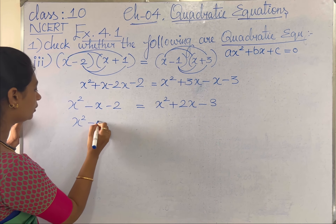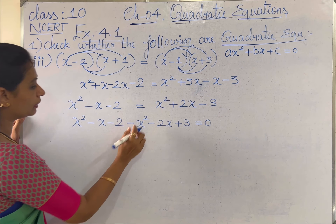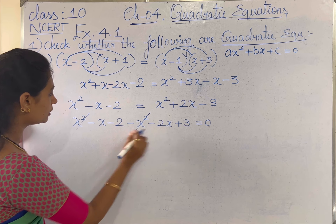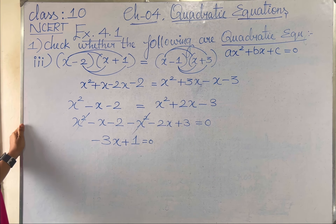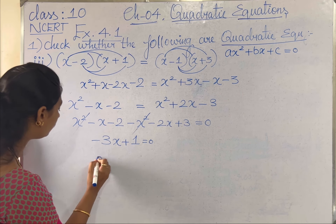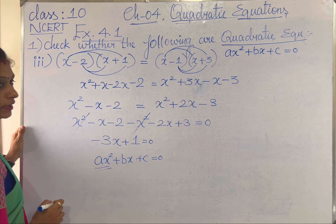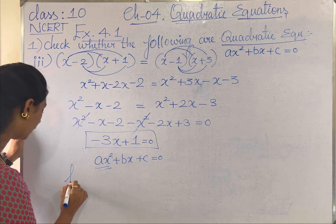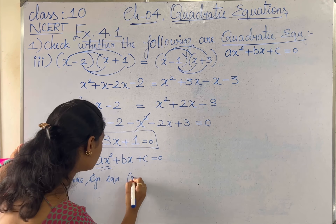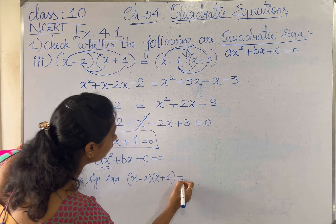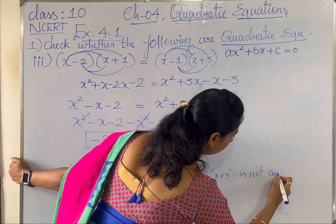Bringing everything to the same side: x² minus x minus 2 minus x² minus 2x plus 3 equal to 0. The x² terms cancel to 0. Minus x minus 2x gives minus 3x. Minus 2 plus 3 gives minus 1. The simplified equation is minus 3x minus 1 equal to 0. Since the x² term is missing, this does not match the general form ax² plus bx plus c equal to 0, so the given equation (x minus 2)(x plus 1) equal to (x minus 1)(x plus 3) is not a quadratic equation.